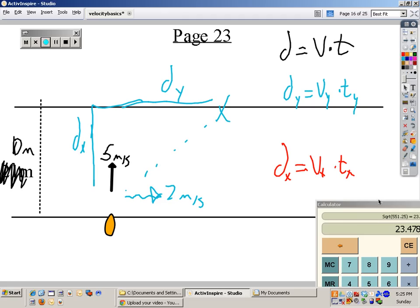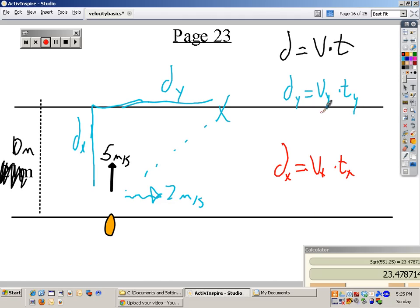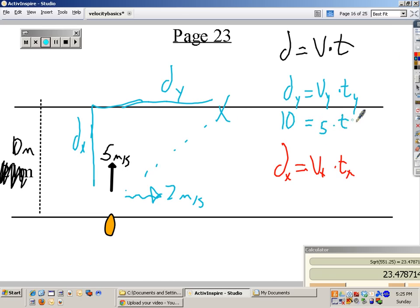Well, which one do you know the most? Let's see. I know velocity in the y equals 5. Oh, should change the color, shouldn't I? Velocity in the y is 5. Distance in the y is 10. And then what do I know down here? All I know is velocity in the x equals 2. I don't know these two, so I have to start here. So if you divide by 5, time equals 2 seconds. And these two are the same. So now this time is also 2 seconds. 2 times 2 is 4 meters.